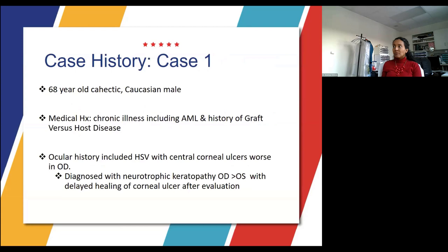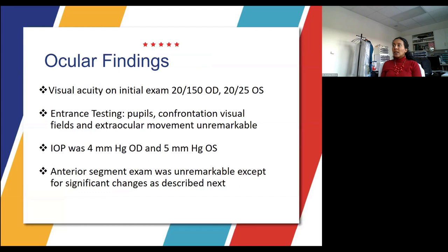Our first case is a 68-year-old cachectic Caucasian male with chronic illnesses including AML and a history of graft-versus-host disease. His ocular history included herpes simplex virus with central corneal ulcers worse in his right eye. His vision on initial exam was 20/150 in the right eye and 20/25 in the left eye. Pupils, confrontation fields, and extraocular movements were unremarkable. IOP was 4 mmHg in the right eye and 5 mmHg in the left eye.